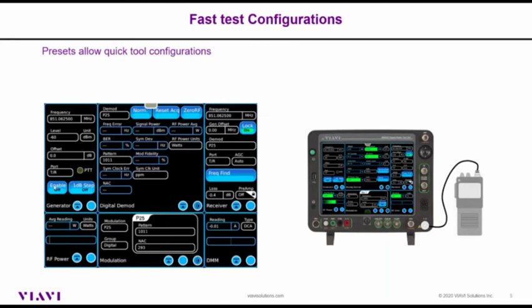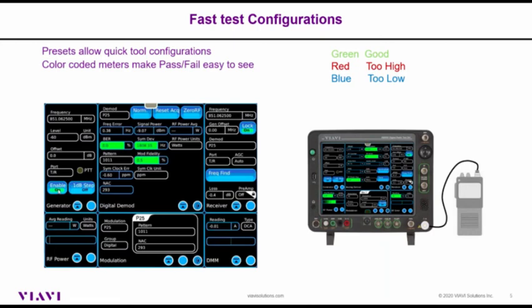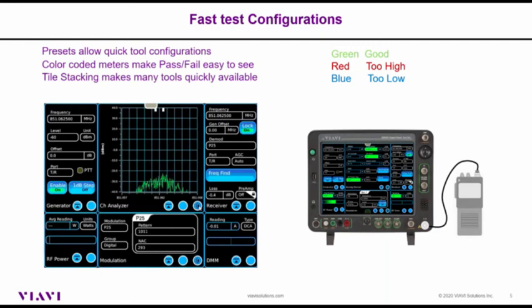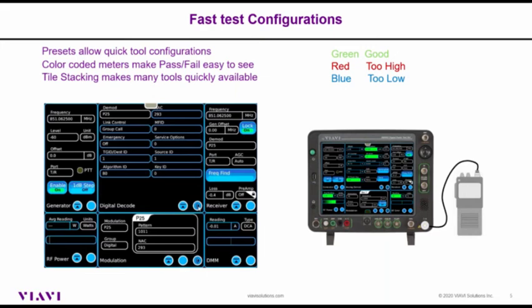We'll turn on the generator to see some of these different tools. One thing you can see when the generator came on is that we have color-coded meters. Green is good, red means it's too high, blue means it's too low. You can configure the colors of any meter. Tools can also stack on top of each other — this is a huge feature because you can stack many tools and then go back and forth between them.